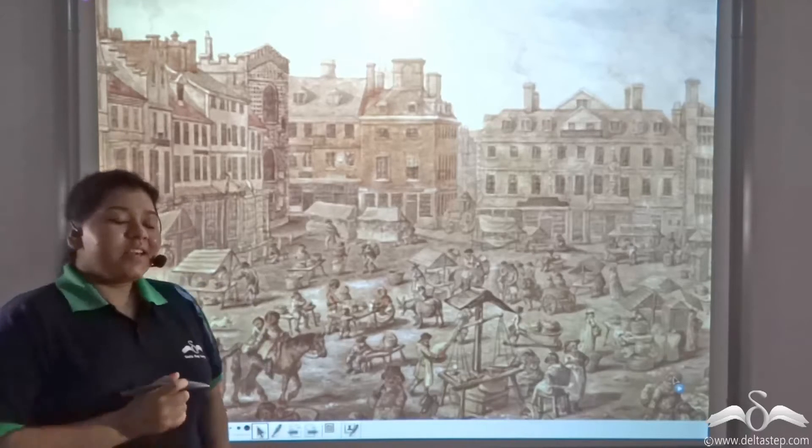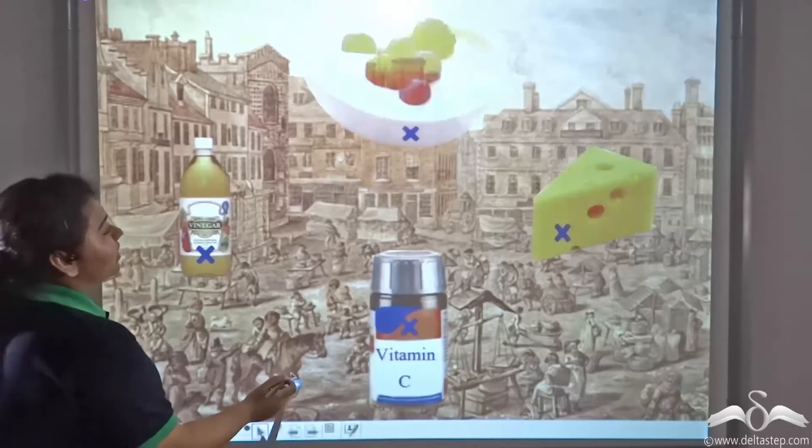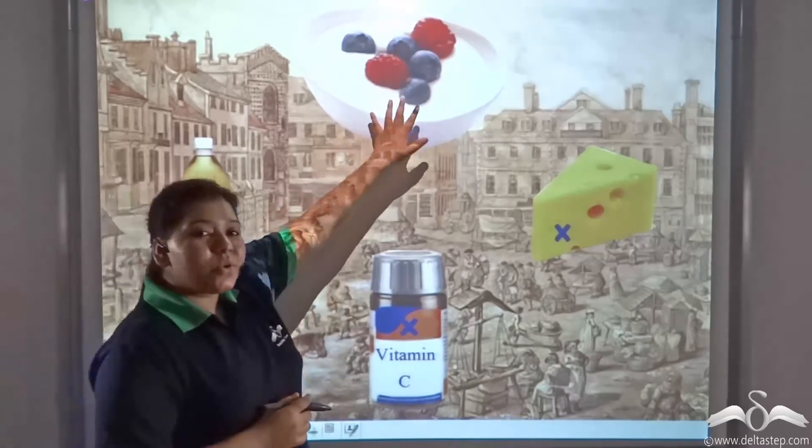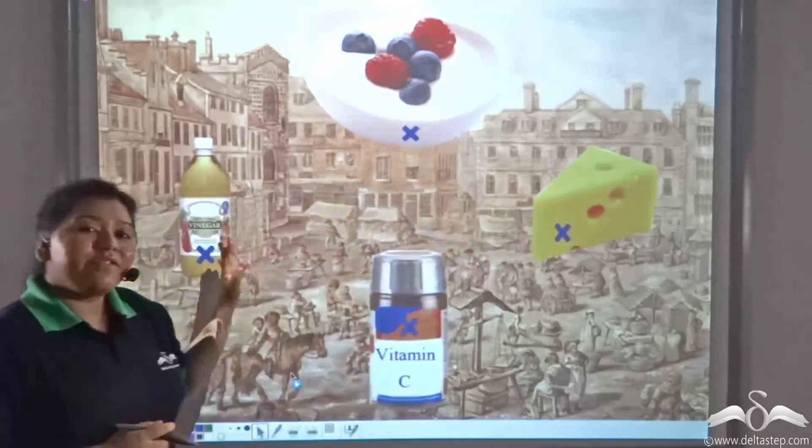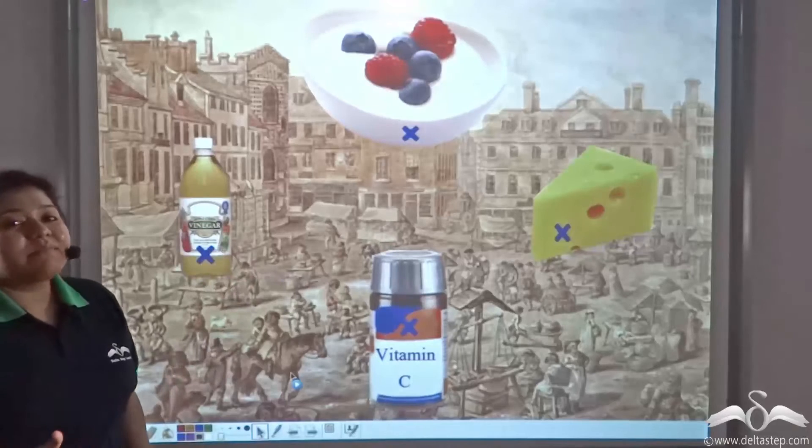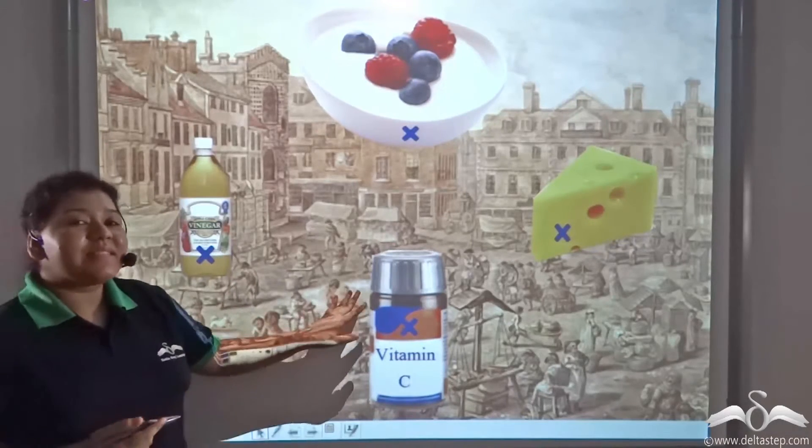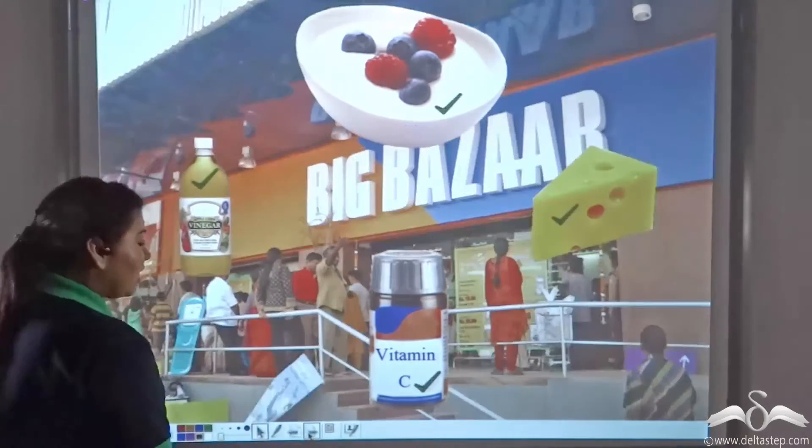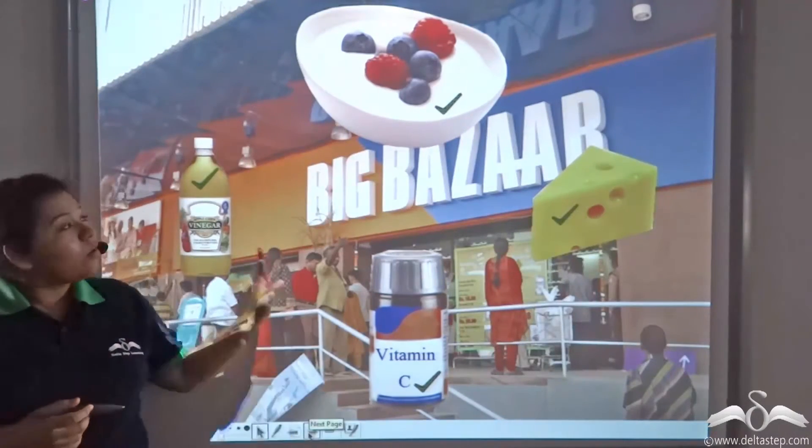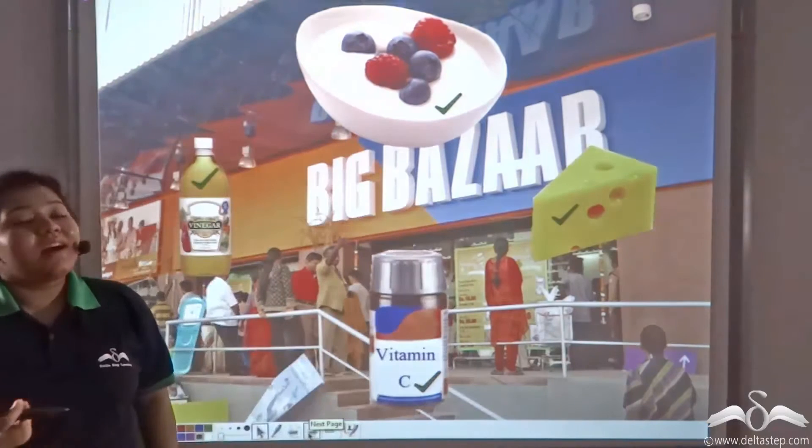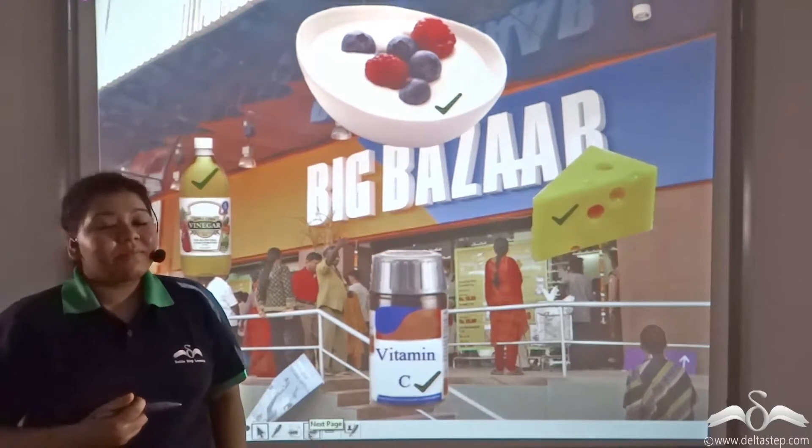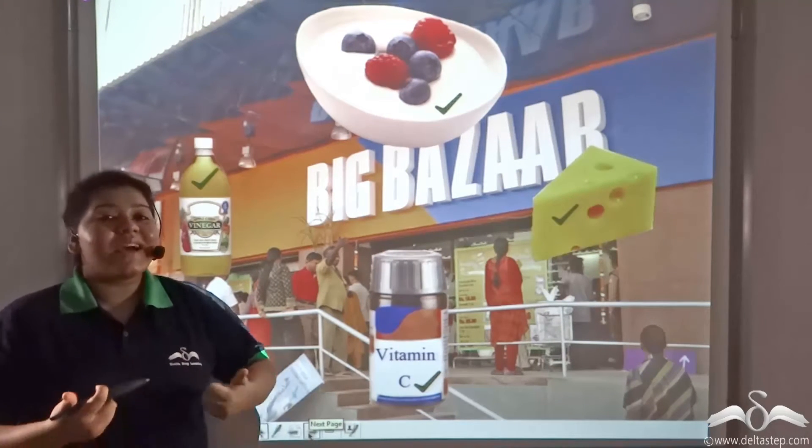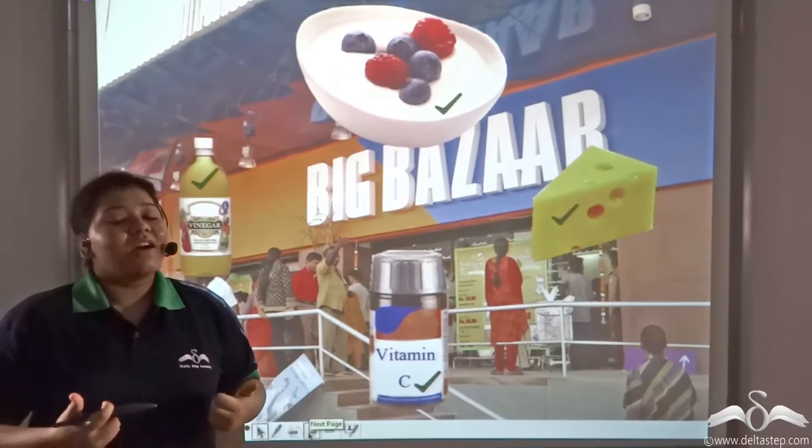Till the 18th century, people did not know that food items such as yogurt, cheese and vinegar, or medicines such as vitamin C tablets, even existed. But now, if you go to a supermarket, all of these items are easily available. Did you know that all these items are boons of biotechnology?